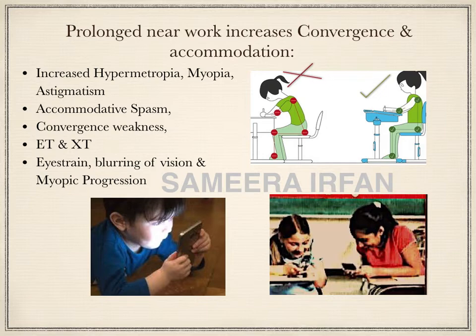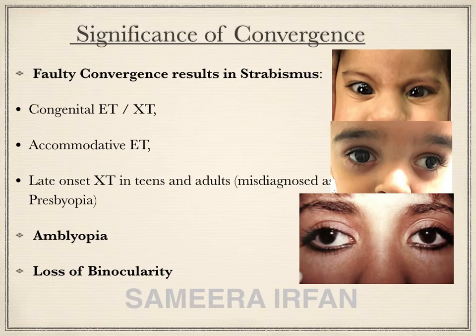In addition, prolonged near work exhausts the continuous effort at convergence and accommodation, and further causes blurring of vision. The blur signal in turn results in axial enlargement of the eyeball and the development or progression of myopia, astigmatism, and squinting eyes. Therefore, taking a break after every 40 minutes of close work or reading and adopting a proper straight-ahead posture while studying is extremely important to prevent strabismus as well as progression of myopia.